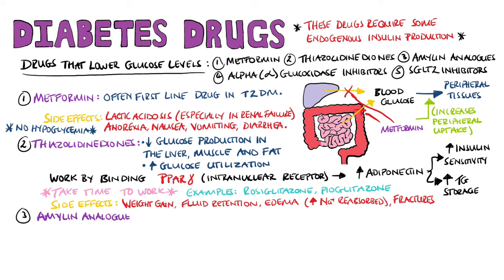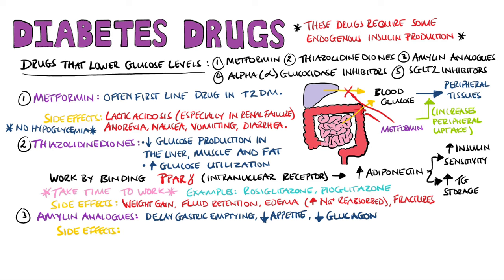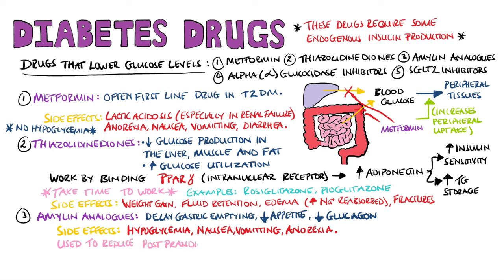Amylin analogues delay gastric emptying, decrease glucagon levels, and decrease appetite. Side effects include hypoglycemia, nausea, vomiting, and anorexia. These drugs can also be used to control the postprandial glucose spike. The main example is pramlintide.